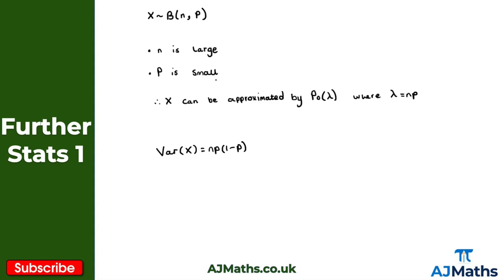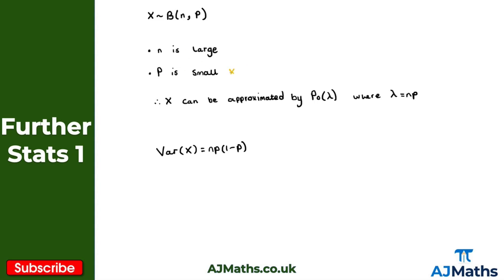We need the two conditions to hold. If p is small, then this 1 minus p term will be very close to 1. The smaller that p is, the closer this term gets to 1. So if this is close to 1, we essentially get np times 1, giving us the variance as just np. That means the variance is close to the mean of the distribution, which satisfies the condition that mean equals variance for a Poisson distribution.